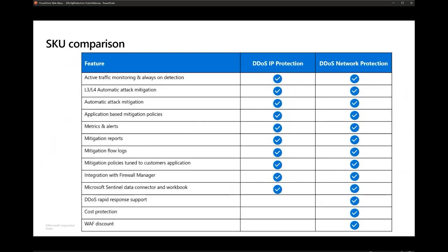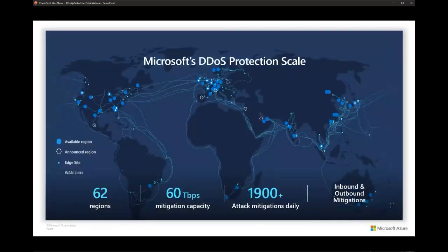Comparing the two SKUs, there are mostly three features that differ: with IP Protection you don't get the WAF discount, cost protection, or DDoS Rapid Response support. Other than that, DDoS IP Protection gives the same amount of protection — always-active traffic monitoring, always-on detection, integrations, metrics, and policies.